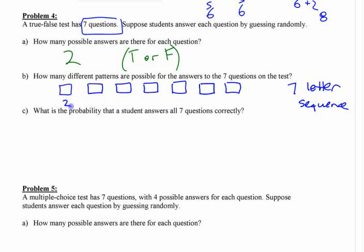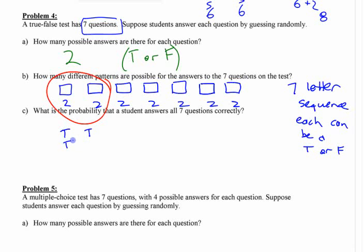And how many choices are there for each of those boxes? There's two, right? Each one can be a T or an F. So there's two for each of them. If you're choosing, think about just the simplest case here of two. If you have two questions, you could have true and then true, or true and then false, or false and then true, or false and then false. There's four different things if you have that.